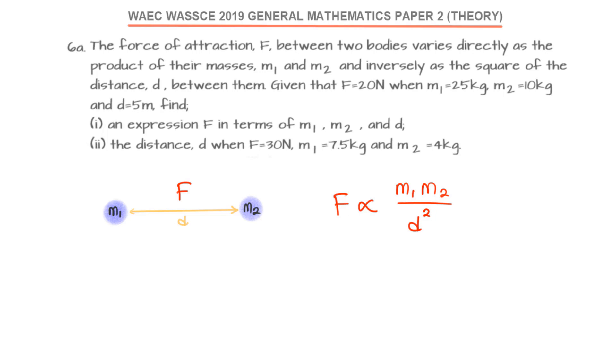This is a classical question in variation, and we are just going to use the principle of variation to solve this question. We are asked to find the expression for F in terms of M1, M2 and D, but looking at this, we are only seeing a sign of proportionality.